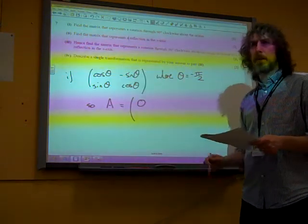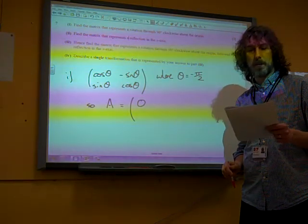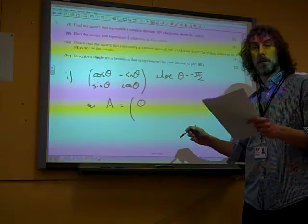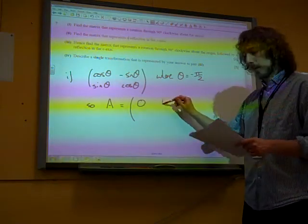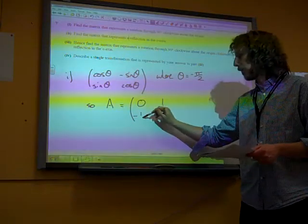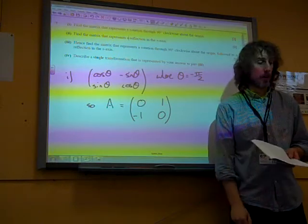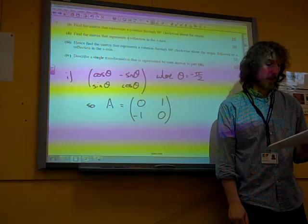Sin of minus pi by 2 is minus 1, so minus the sin of minus, minus minus 1 gives us plus 1. Sin of minus pi by 2 is minus 1, cos of pi by 2 is 0. And if you just write that down, you've got your two marks for that. So that's the start point.